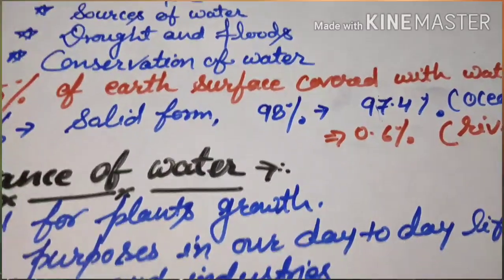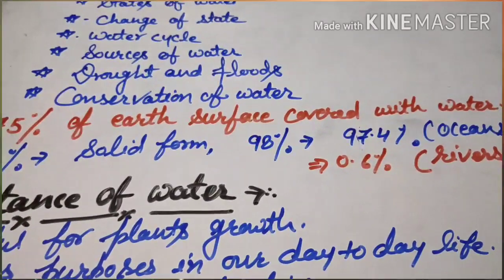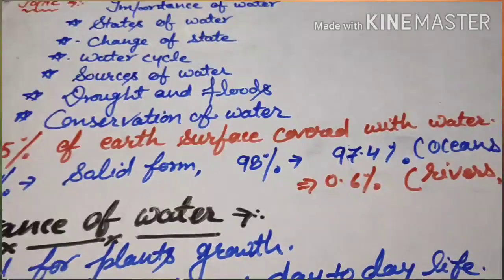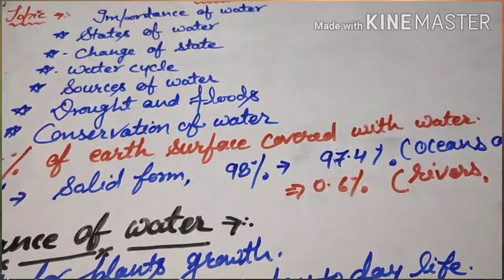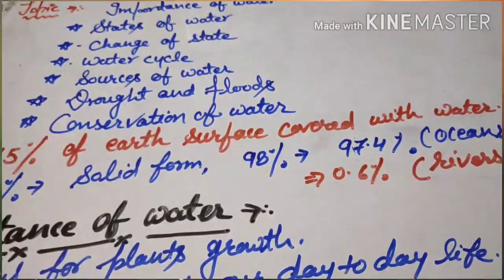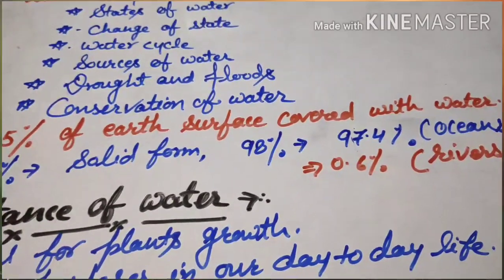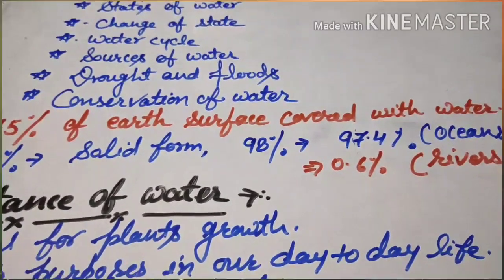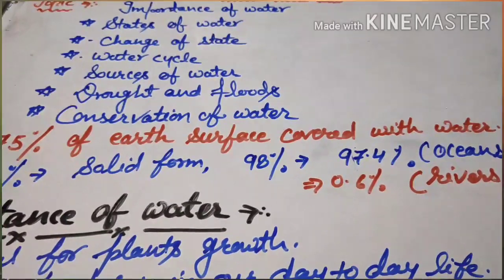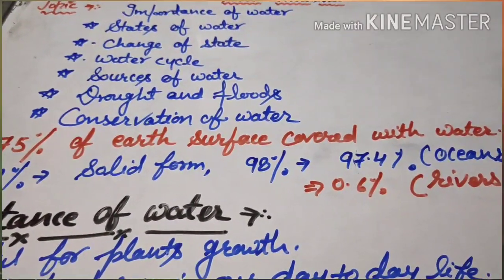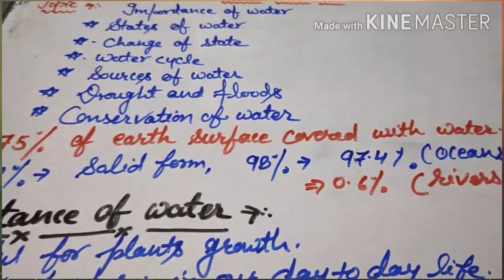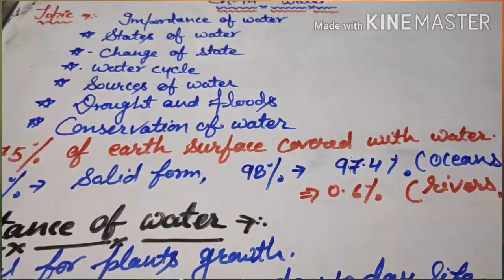Yet we still hear of water shortages at many places. Why is there a shortage of water? Because most of the water is in the oceans and seas, and it contains a high amount of salt, so we cannot use it directly.